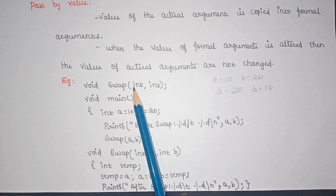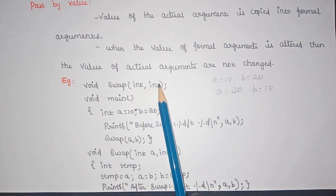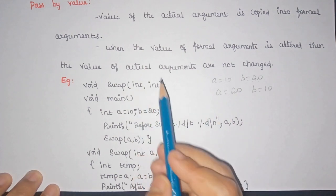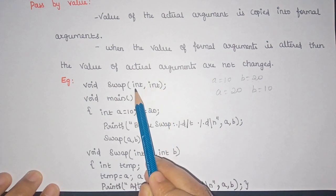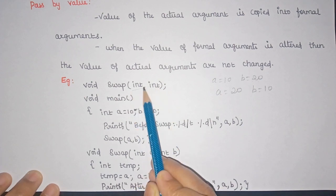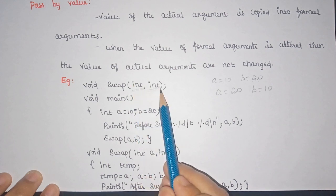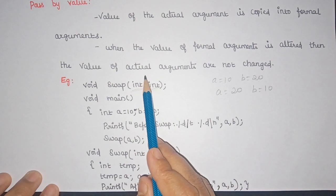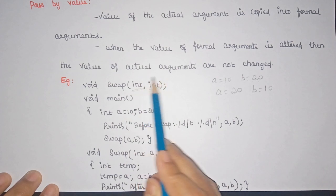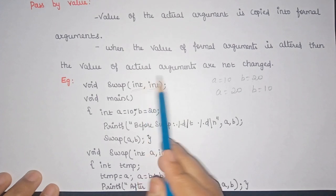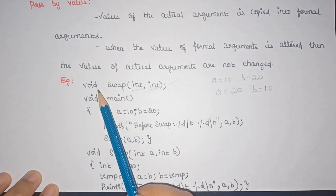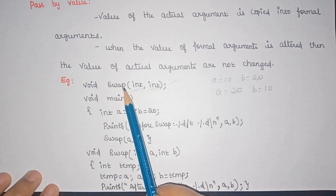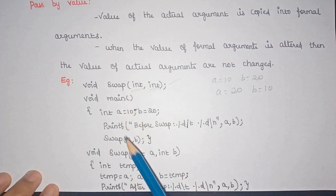The function takes two parameters, both of integer type. Notice that I'm not specifying any variable name in the declaration — it is okay to just specify the data type. It is not necessary to also specify the variable name. This is the declaration of the function and the function name is swap. Inside the main function we have two variables a and b with values 10 and 20.